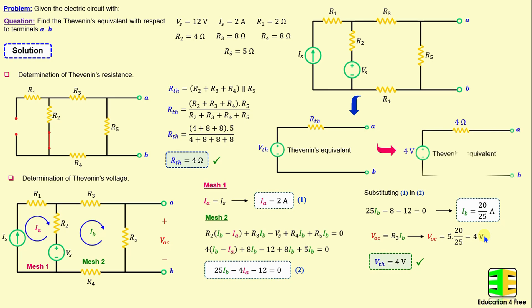That means the equivalent circuit with respect to terminals A and B can be replaced with a 4 volt voltage source in series with a 4 ohms resistor.